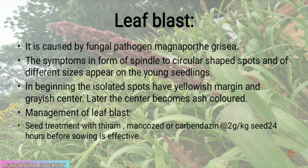Leaf blast is caused by the fungal pathogen Magnaporthe grisea. Symptoms appear as spindle to circular-shaped spots of different sizes on young seedlings. Initially the isolated spots have a yellowish margin and gray center; later the center becomes ash-colored. Management: seed treatment with thiram or carbendazim at 2 grams per kg of seeds 24 hours before sowing is effective.